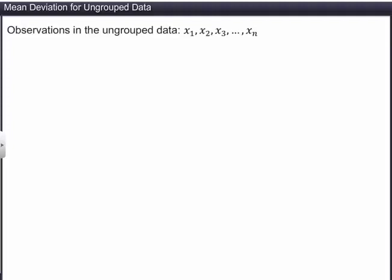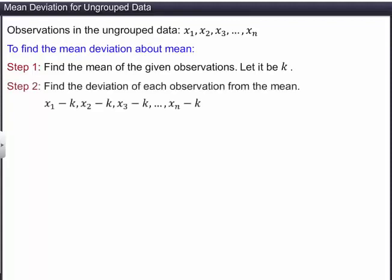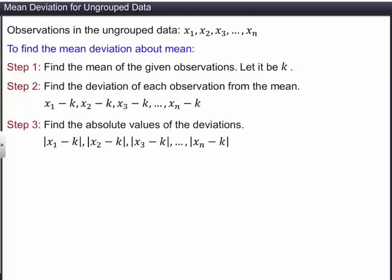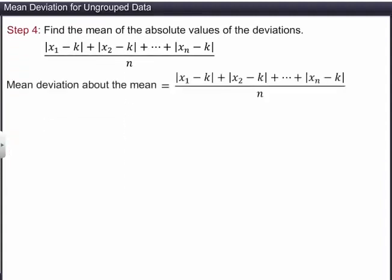Let's find the mean deviation about the mean of an ungrouped data. Let the observations be x1, x2, x3, and so on up to xn. To find the mean deviation about the mean, first find the mean of the given observations — let this be k. Next, find the deviation of each observation from the mean by subtracting the mean from the observation. Now, find the absolute values of those deviations, then find their mean. This mean is the mean deviation of the observations about the mean k.